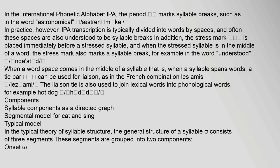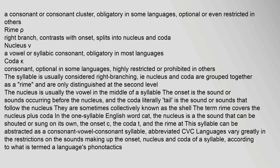In the typical theory of syllable structure, the general structure of a syllable consists of three segments grouped into two components: the onset (a consonant or consonant cluster, obligatory in some languages, optional or restricted in others) and the rhyme, which contrasts with the onset and splits into the nucleus and coda. The nucleus is a vowel or syllabic consonant, obligatory in most languages. The coda is a consonant, optional in some languages, highly restricted or prohibited in others.